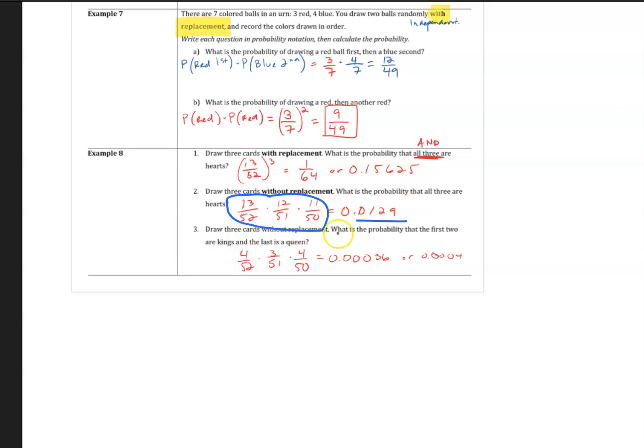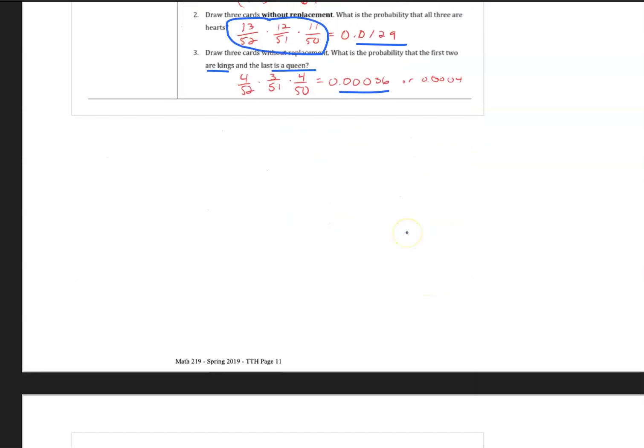Draw three cards without replacement. What's the probability the first two are kings, the last one is a queen? You will see the first two are kings, so four out of 52 times three out of 51, and the last one's a queen, four queens left out of 50. And so you can see a very small probability if you choose three cards that the first two are kings and the last one is a queen. But it does happen, even though it's a small probability.